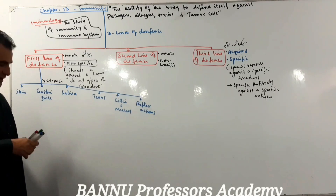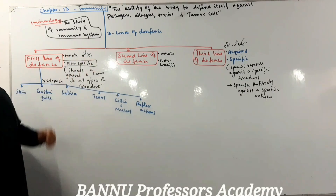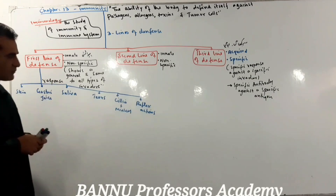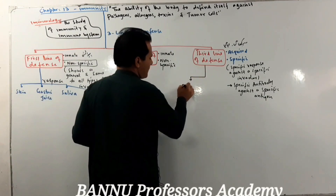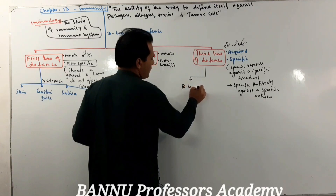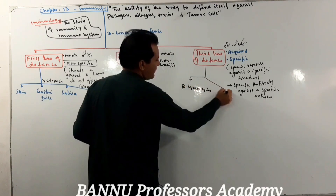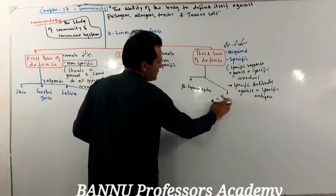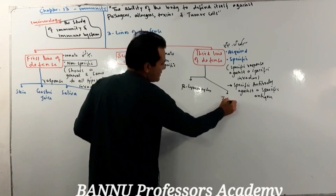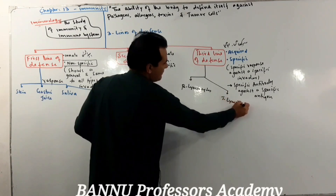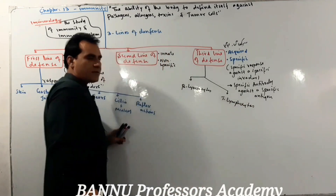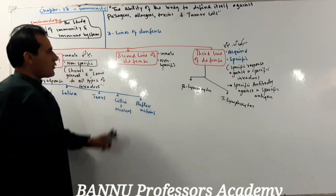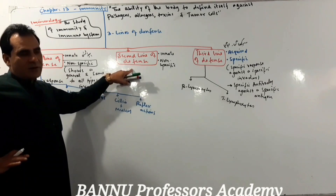The second line of defense and the third line of defense each have their components. For example, the third line of defense involves B lymphocytes and T lymphocytes. White blood cells operate in a similar way across these lines.